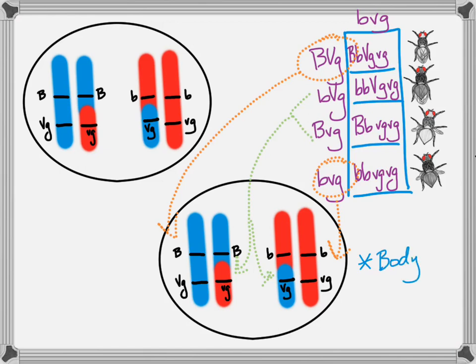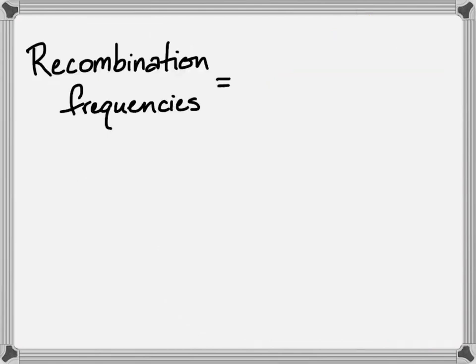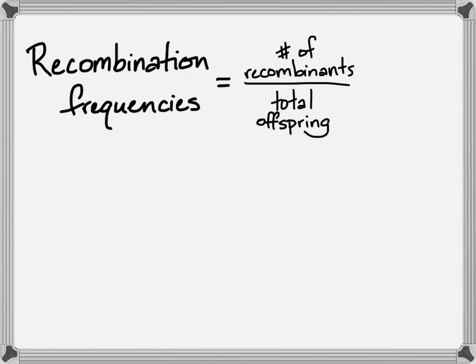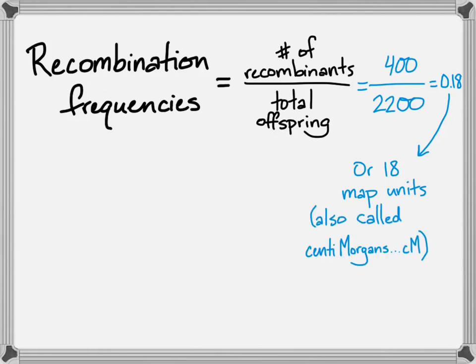We say that any genes like this are linked. So, the body color and the wing shape are linked genes, but any genes found along the length of a chromosome are linked. The geneticists in Morgan's lab used lots of recombination frequencies. That's your total number of recombinants over your total offspring. That would be something like 400 over 2200, for our example from before. And that gives you 0.18, and they established a new unit. They called it the map unit. It's also called a centimorgan, or lowercase c, capital M, named after Thomas Hunt Morgan himself.